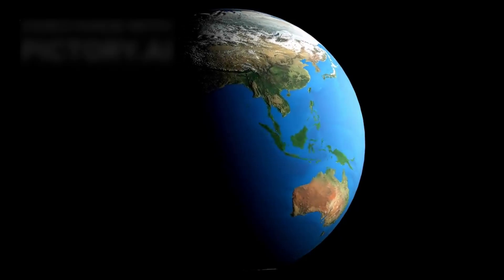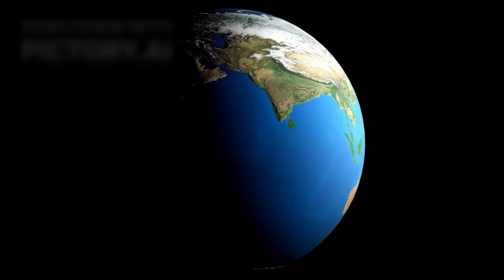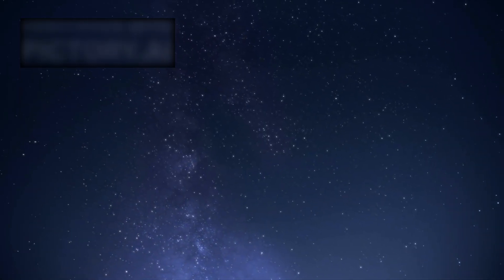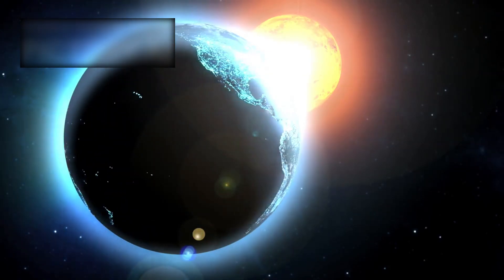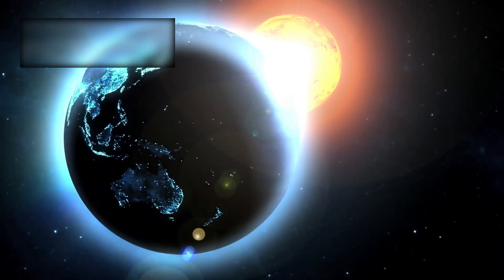And yet, in cosmic terms, Voyager is still incredibly close to home. Our solar system itself is but one small corner of the Milky Way galaxy, a vast stellar city containing some 300 billion stars, most of them with planetary systems of their own.